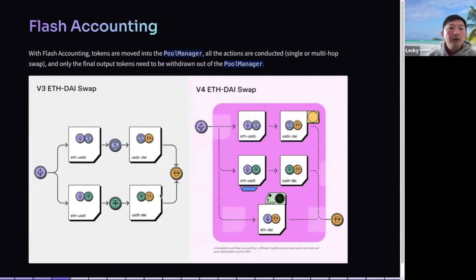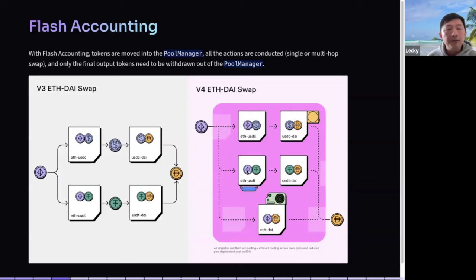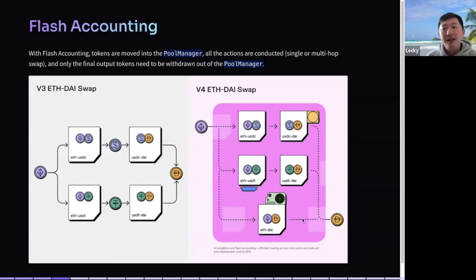With flash accounting, in V3 doing a single or multi-hop swap meant jumping through different contracts containing pools and different pool tokens. Now with V4, everything is under one single contract which can contain maybe dozens of different tokens. At the end you just calculate the delta, which removes all the extra costs of jumping through different contracts.